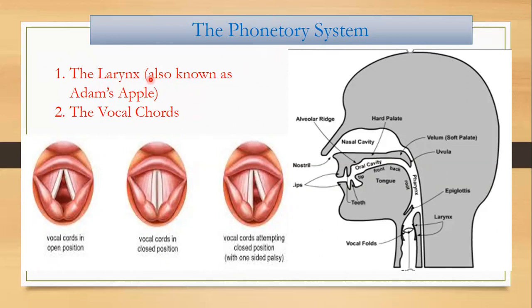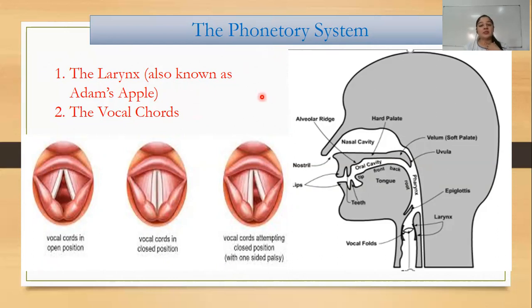Now what is the phonatory system? The first step is that air comes out through the lungs, travels through the windpipe, and finally meets the speech organs, from where the voice comes out. The air first comes through the larynx. Students, just touch this portion of your neck — you can feel a bone coming out. That is the larynx, also known as Adam's apple.